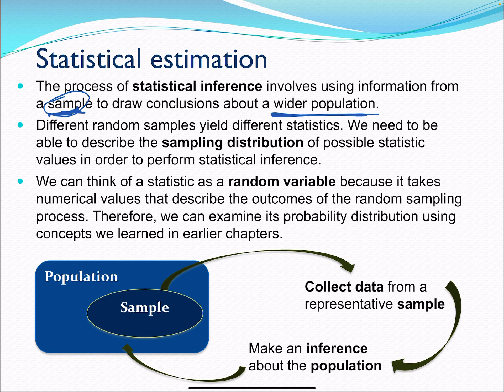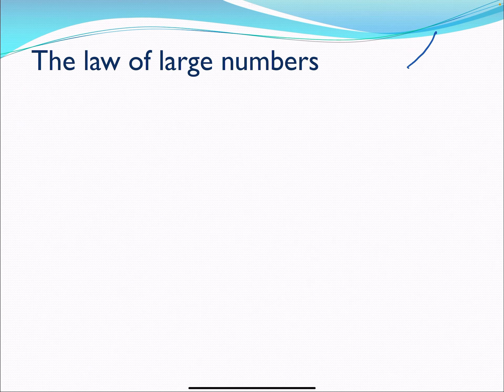So we need to be able to describe the sampling distribution of a possible statistic in order to perform statistical inference. That means I'm going to be looking at the distribution of the means, and hopefully it fits something normal, but I didn't really draw a normal curve there. It will, as long as our n is big.